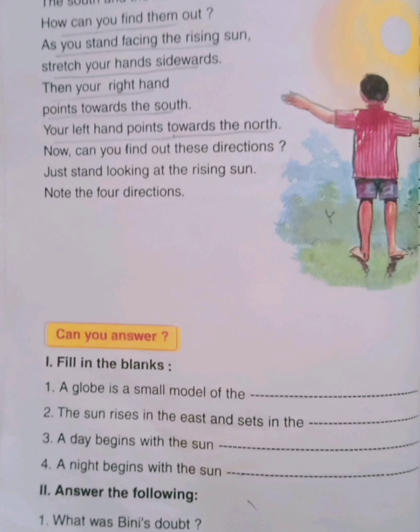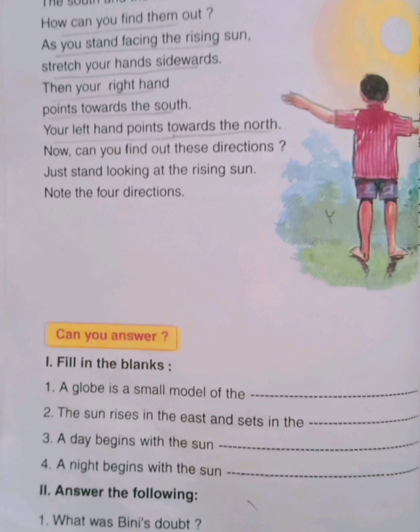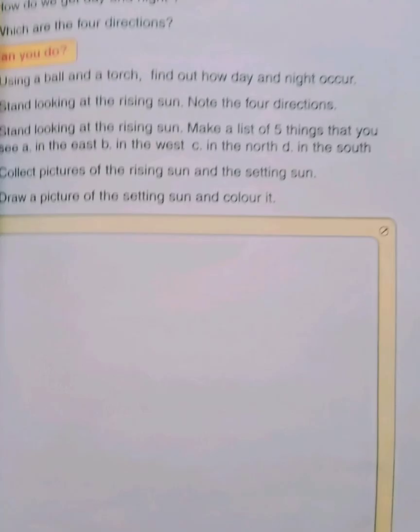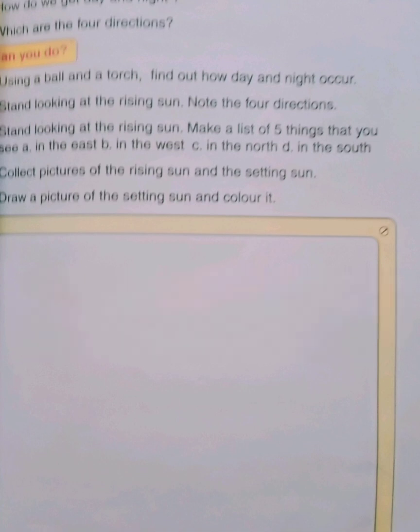Answer the following. First question: What was Binnie's doubt? How do we get day and night. Second question: What is a globe? The globe is a small model of the Earth. Third: How do we get day and night? Because of the rotation of the Earth, we get day and night. Last question: Which are the four directions? East, west, north, and south.